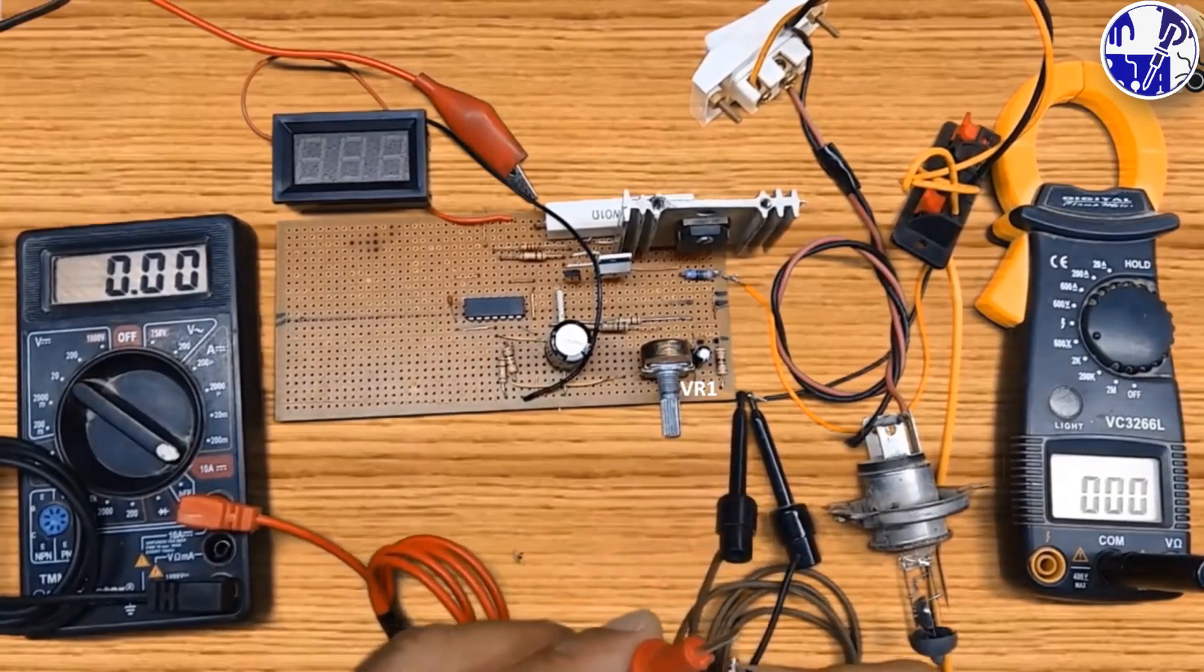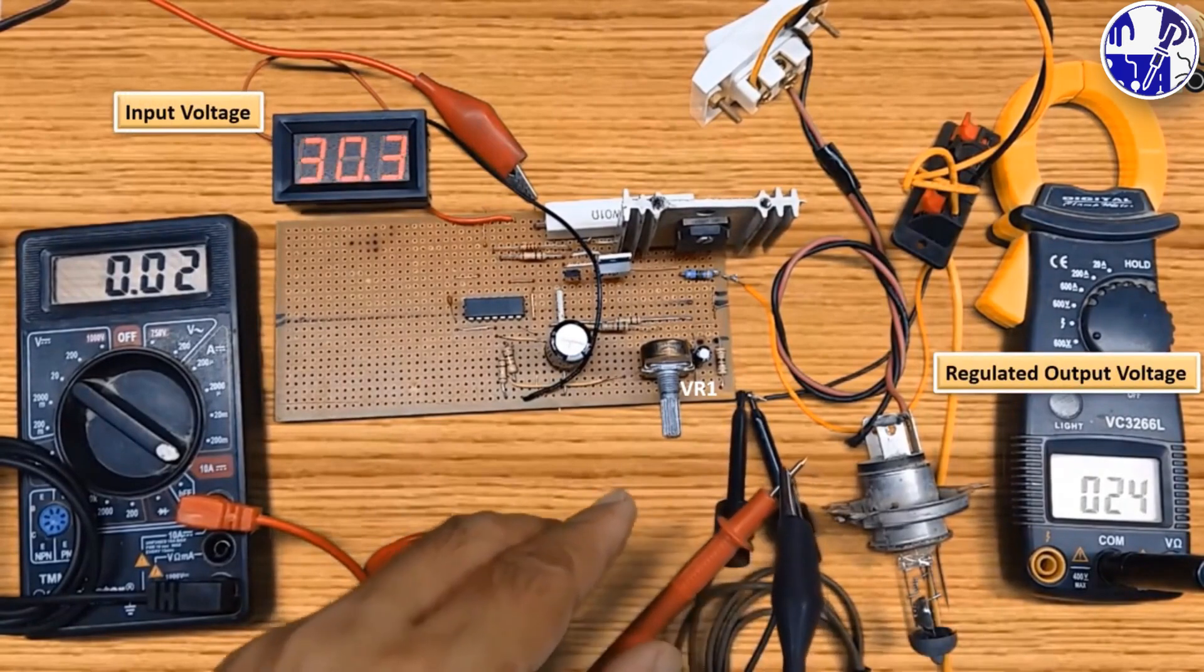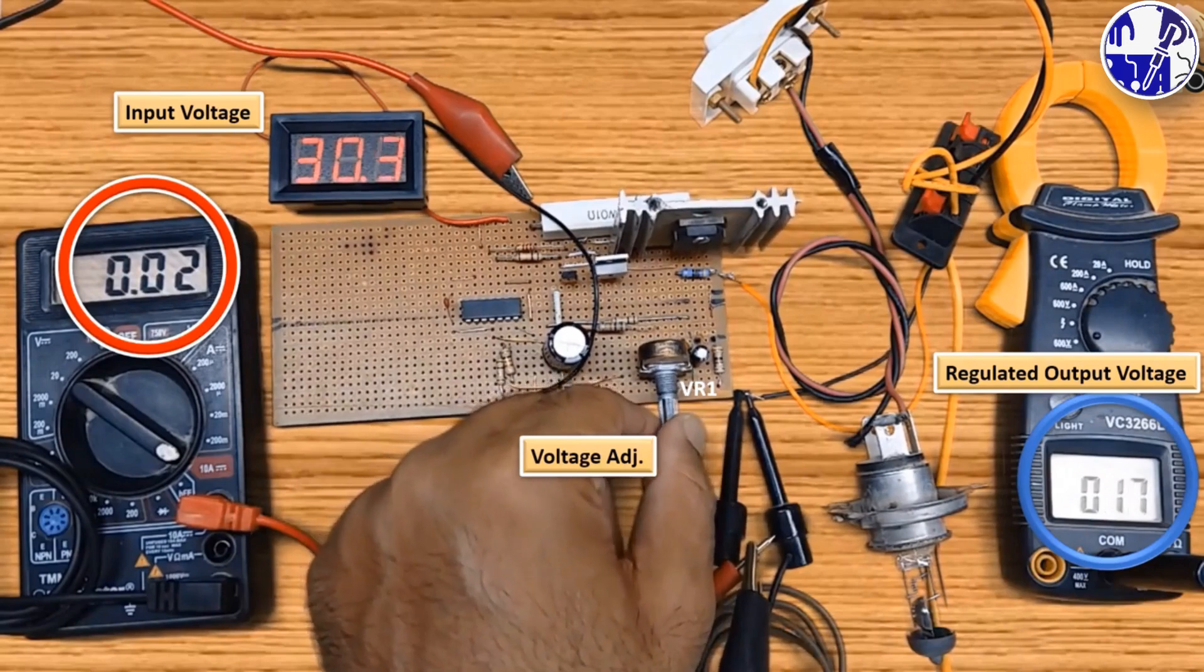After successfully installing all components on the Vero board and completing the wiring, connect the circuit to a 30 volt input supply.